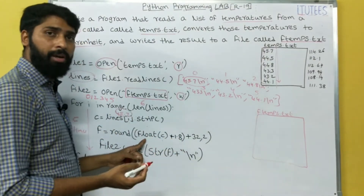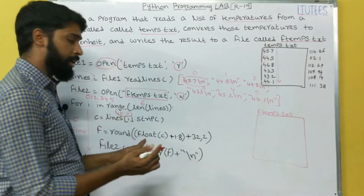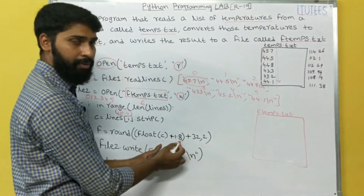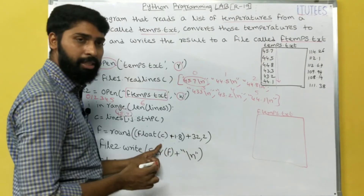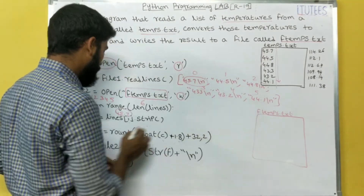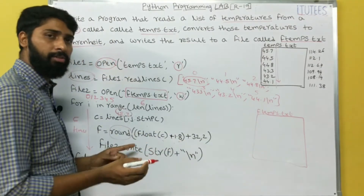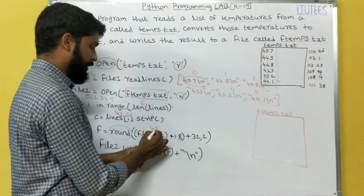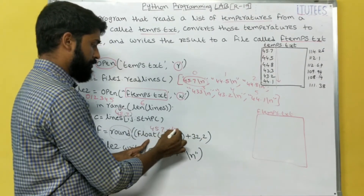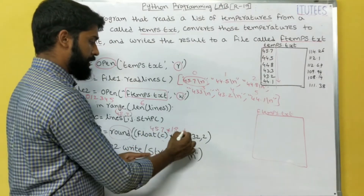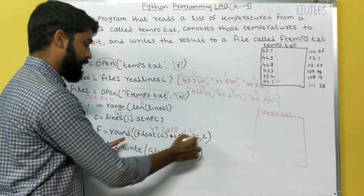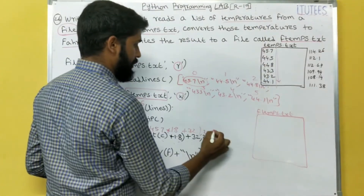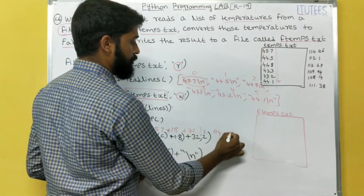The formula for converting Celsius to Fahrenheit is: Celsius * 9/5 + 32, which equals Celsius * 1.8 + 32. We use the round function to round the result to 2 decimal digits. So float(C) * 1.8 + 32, rounded to 2 digits, gives us 114.26.